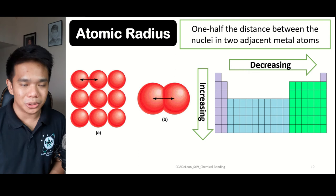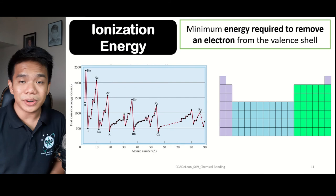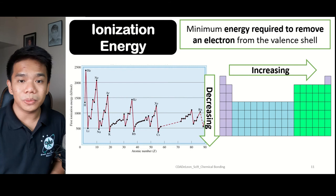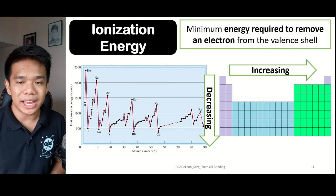Next we have ionization energy. Ionization energy refers to the minimum energy required in order to remove an electron from its valence shell — the term ionization referring to electrons being removed from the atom. When we go from left to right, ionization energy tends to increase. On the other hand, it tends to decrease when we go from top to bottom, simply because non-metals usually have higher ionization energies compared to metals.